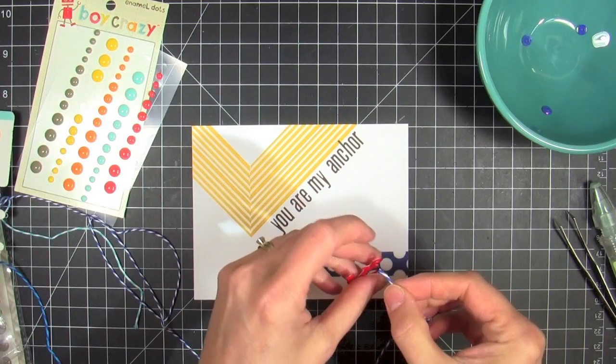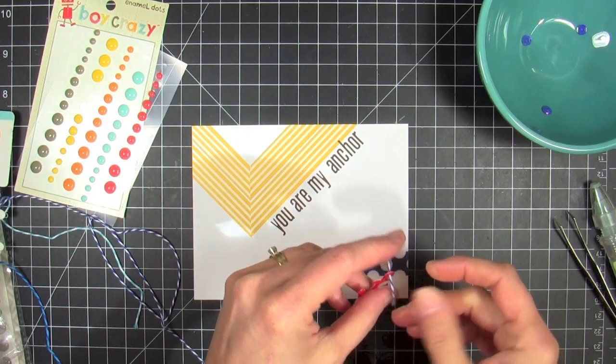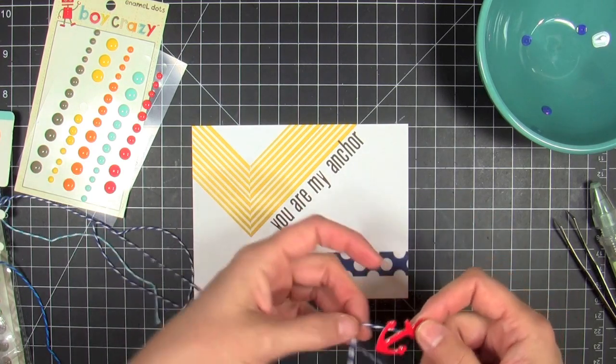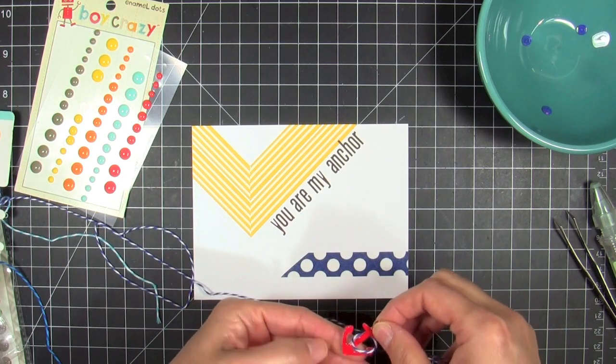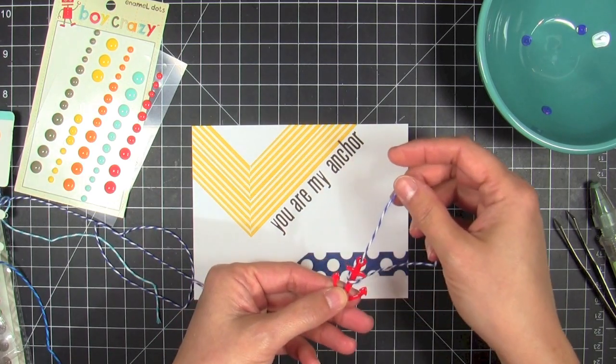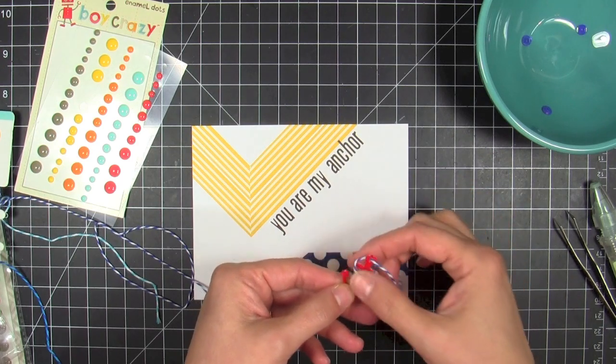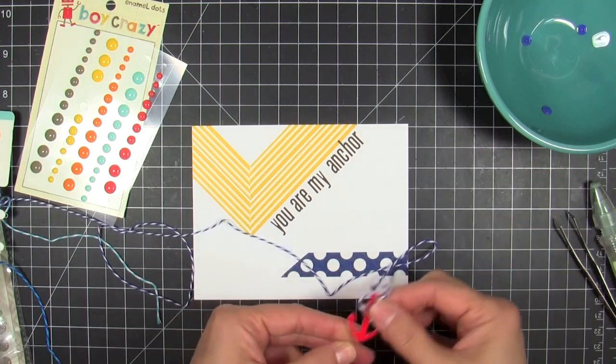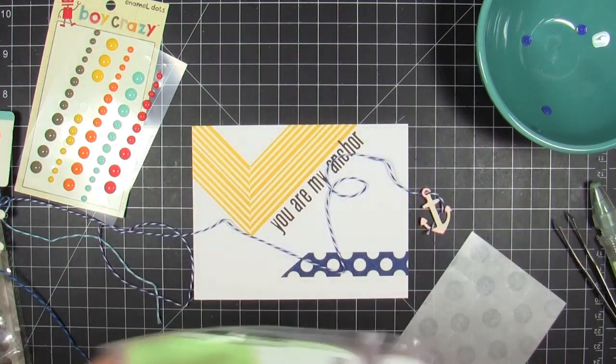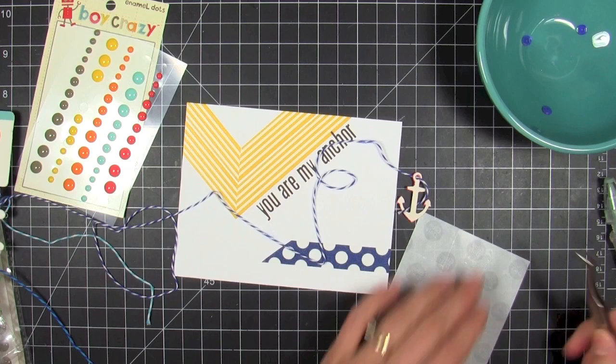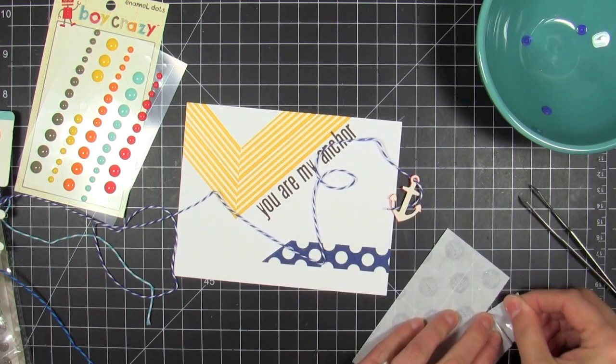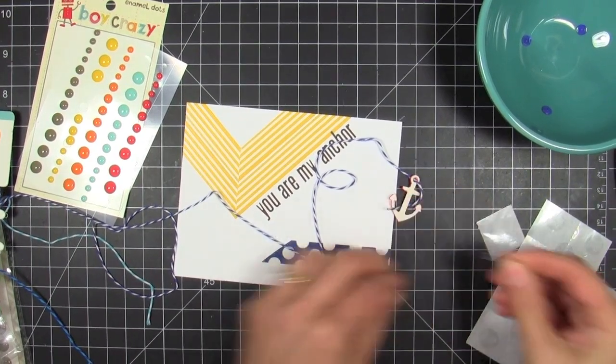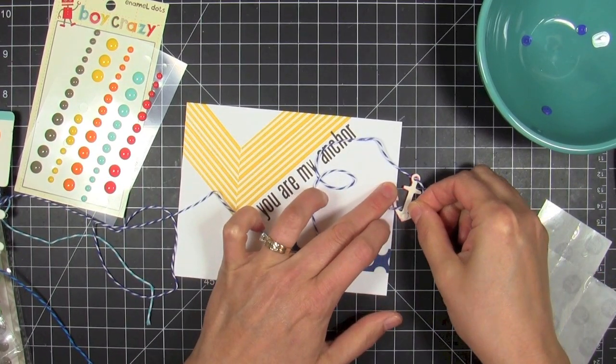Now my little anchor is all completely dry, and yes, through the magic of TV, I had one already done so I could keep going with the card. I did one the night before because I knew I wanted to have one for this card. Then I'm just gonna start adding some of this cobalt blue or navy blue and white baker's twine to kind of keep tying in those nautical colors. I'm just gonna take a little mini glue dot and put that on the back side of my anchor.